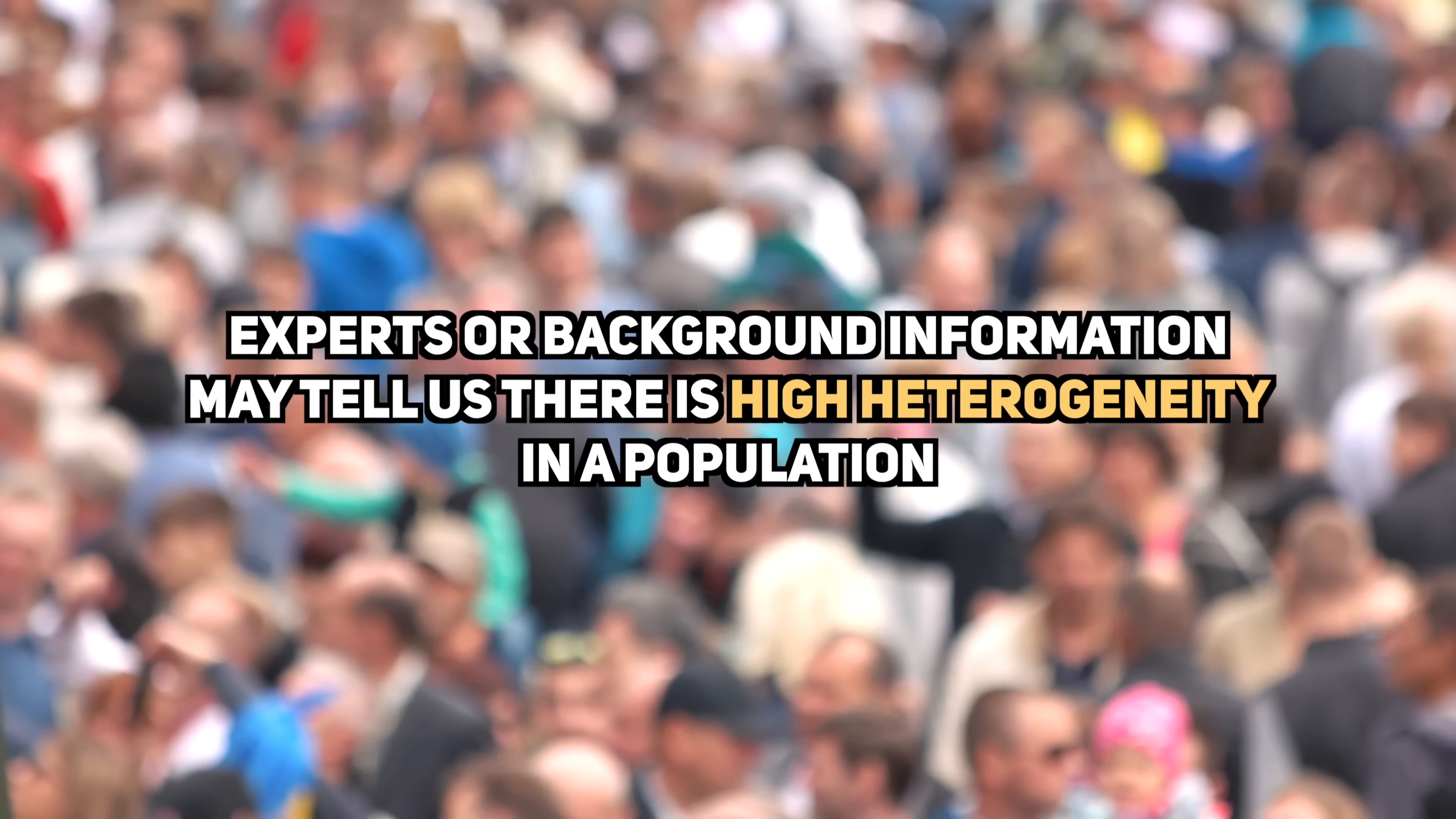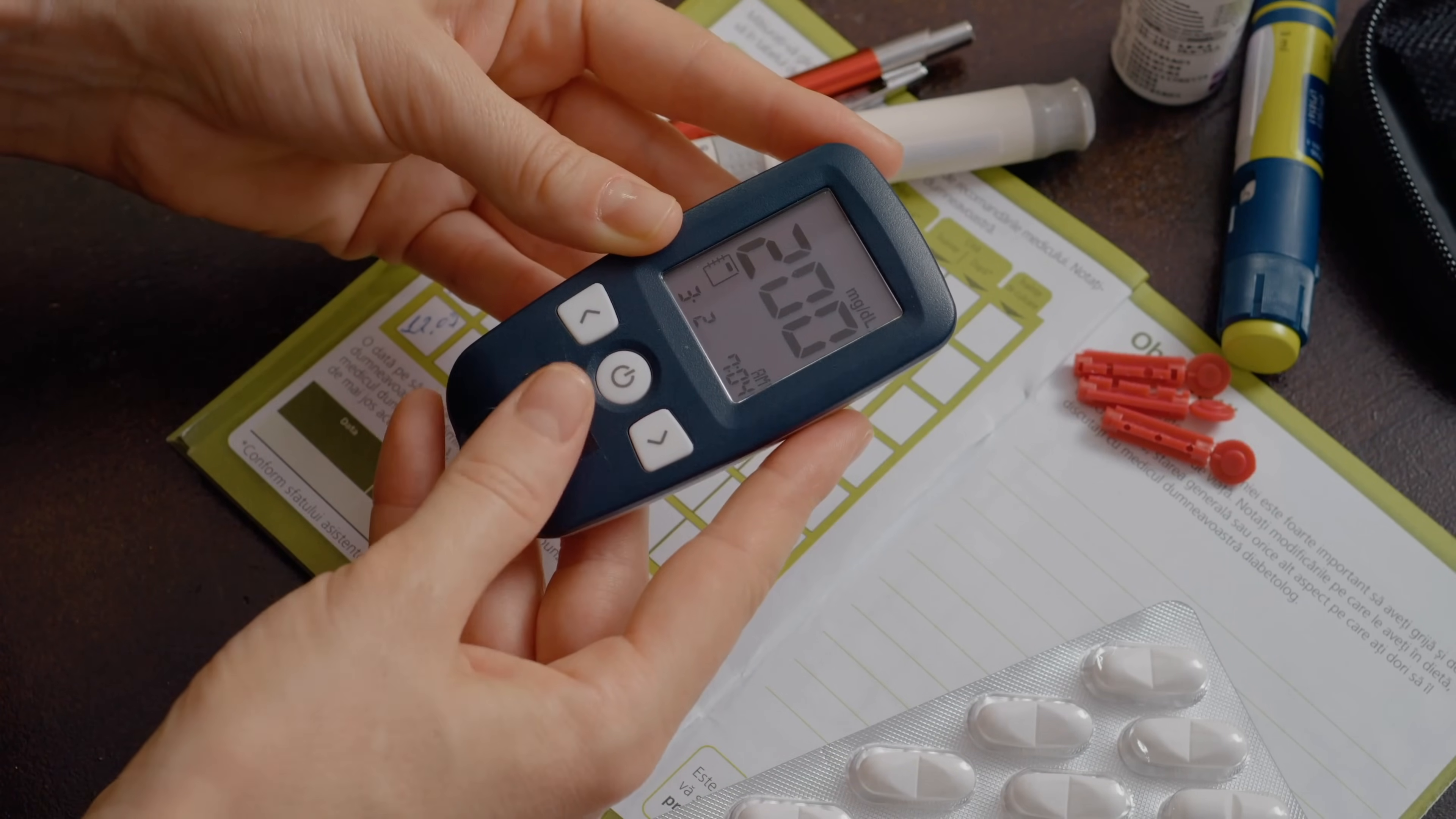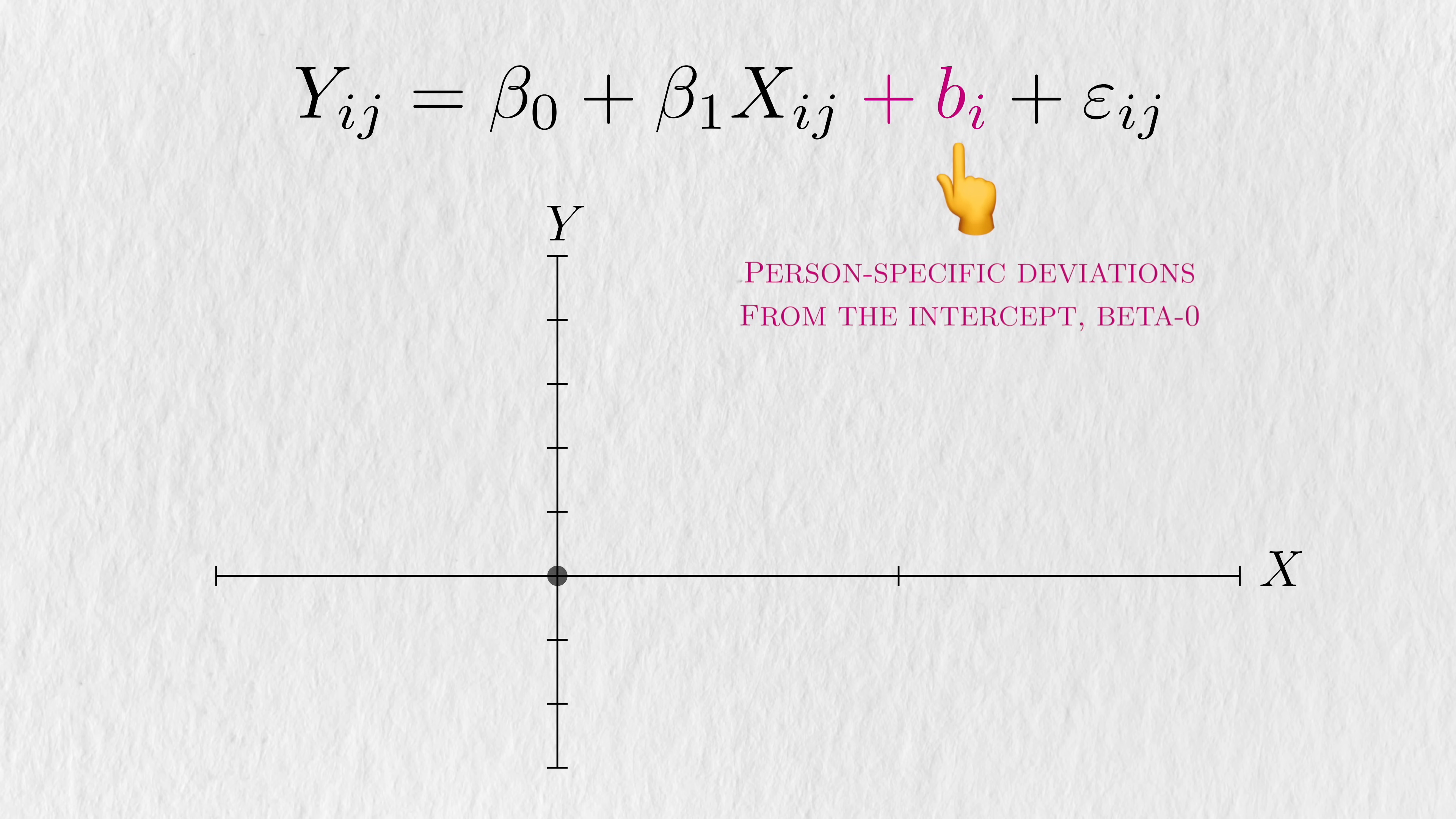Sometimes, expert information or background knowledge will tell us that there is considerable heterogeneity in a population. For example, this would mean that people have varying average levels of blood glucose under placebo. Under linear regression, we would be ignoring all of these person-level differences, since we're just using a single parameter to capture this average. But what if we allowed everyone to have a slightly different average outcome? What would that look like? There's several ways to do this, but the way that mixed effects models do that is through person-specific deviations or differences from this overall beta0.